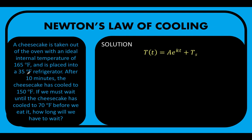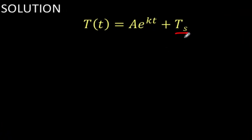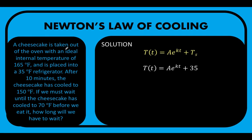From the given problem we know that the cheesecake is placed in a refrigerator that has a temperature of 35 degrees Fahrenheit. This 35 degrees is our T sub s, the temperature of the surroundings, so we are going to replace this T sub s by 35 degrees.